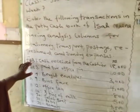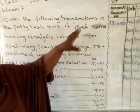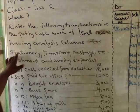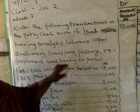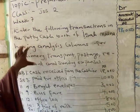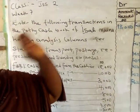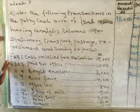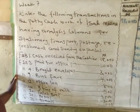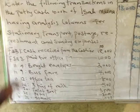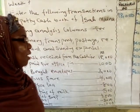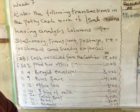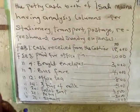For example, looking at the question: they enter the following transactions in the Petty Cash Book of Issa Maina, having analysis columns for stationery, transport, postage, refreshments, and sundry expenses. All we need to do is post them to the analysis column. These transactions were carried out in the month of February by the Petty Cashier. On February 1st, the Petty Cashier received $18,000 from the main cashier to make payment for minor expenses.